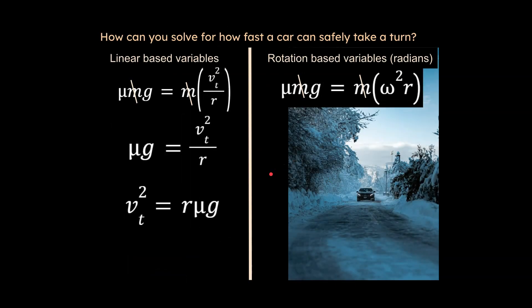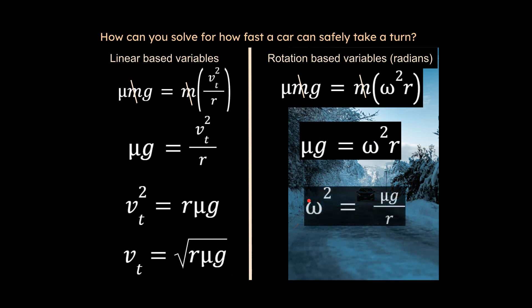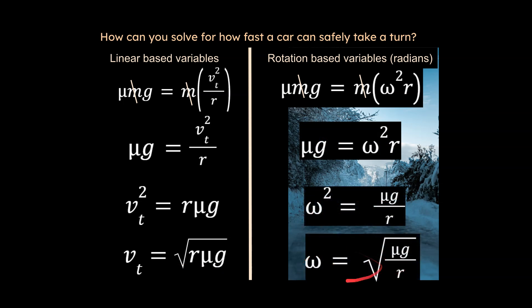So we're going to continue to isolate and simplify. We end up with this value for linear-based variables, and we end up with this value for radian-based variables. And so either way you do it, it's going to be totally solvable.